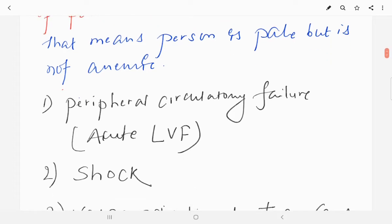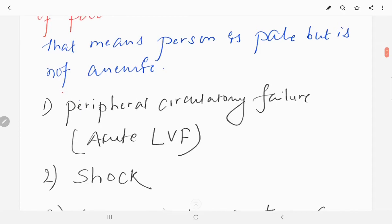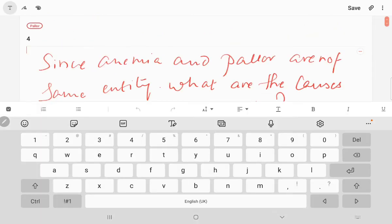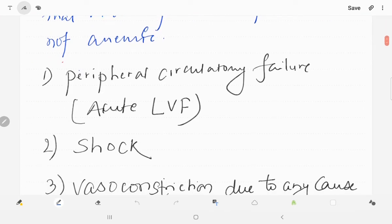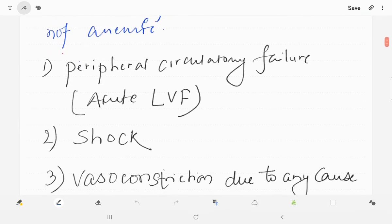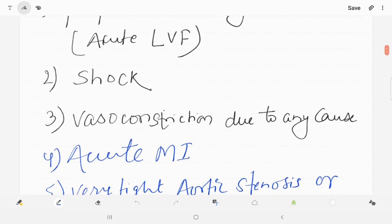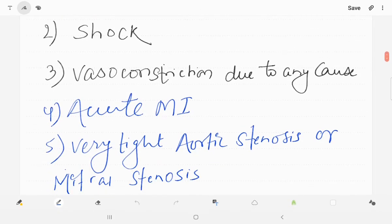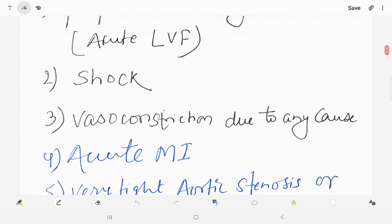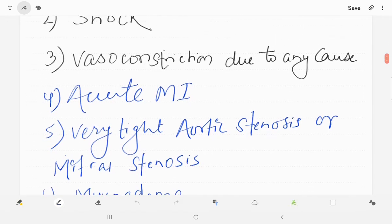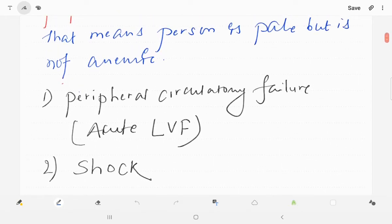So there has to be other causes of pallor without anemia. That means person is pale but is not anemic. What are the causes? Peripheral circulatory failure as in acute left ventricular failure. Acute myocardial infarction also leads to paleness without being anemic. Very tight aortic stenosis or mitral stenosis. So we are seeing that all these points are related to the idea that when there is decreased blood in that particular area it will be visible as pale.